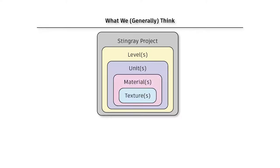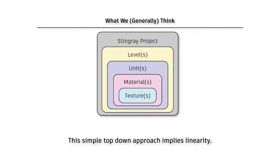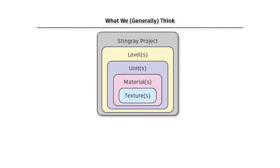But that's just not the case, and there's a reason why — because this would be extremely linear. It could theoretically work, but if you think about it, if a unit is always containing a material and the material is always containing the texture, then you'd have the inability to put different textures on different materials, or the same texture on different materials, or different materials onto different units. There's no way you could have one material applied to several units this way, because it just wouldn't really work. So what we have is a little bit more of a complex system.